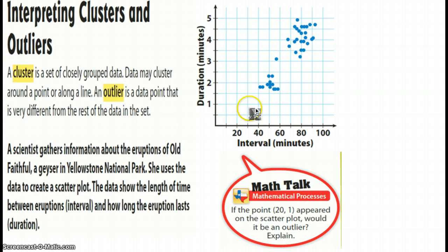So the author gives us this particular graph, and we've got a couple things working here. First, he tells us that a cluster is a set of closely grouped data. So we're talking about the duration and intervals in minutes. This is bivariate data right here. And it says data may cluster around a point or along a line. So we're looking at two different types of clusters here.